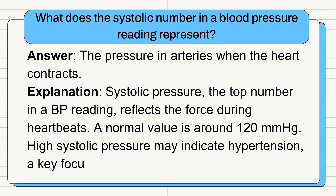Question 4: What does the systolic number in a blood pressure reading represent? Answer: The pressure in arteries when the heart contracts. Systolic pressure, the top number in a BP reading, reflects the force during heartbeats. A normal value is around 120 millimeters of mercury. High systolic pressure may indicate hypertension, a key focus in nursing care.